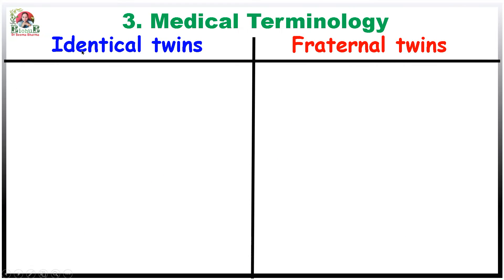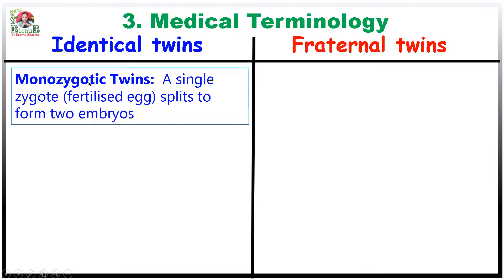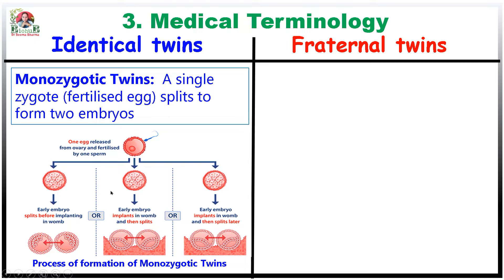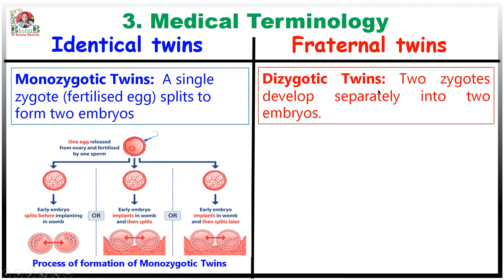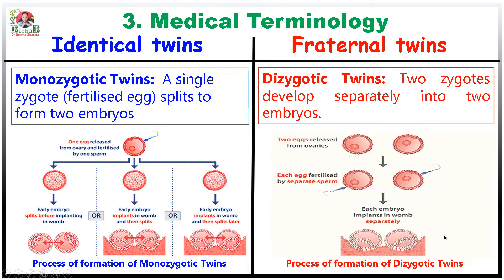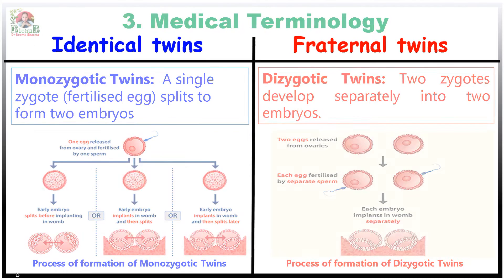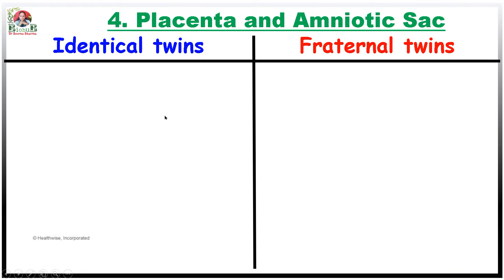In medical terms, identical twins are called monozygotic twins because they are made from a single zygote which later splits into two embryos. This is shown in a pictorial representation of the same process. In contrast, the medical term for fraternal twins is dizygotic twins because they are made up of two separate zygotes, also shown in a pictorial representation.